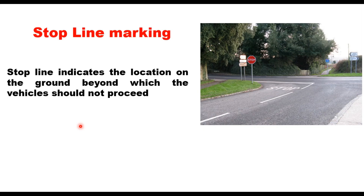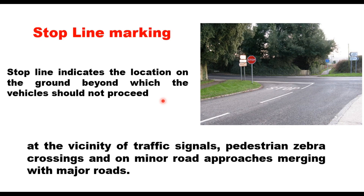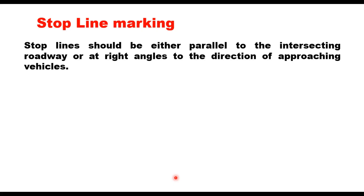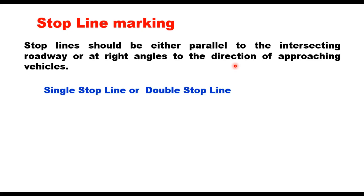Stop line marking indicates the location on the ground beyond which the vehicle should not proceed. It is a mandatory marking where the driver should stop before crossing the intersection — it can be in the vicinity of a traffic signal, a pedestrian zebra crossing, or a minor road approach merging with a major road. The stop line should be either parallel to the intersecting roadway or at right angle to the direction of the approaching vehicle.